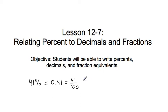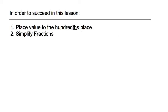You can already see that percent, decimals, and fractions are all related because there's a 41 in each one. To succeed, you'll have to be able to recognize the place value of the hundredths place, and also be able to simplify fractions by finding the greatest common factor and reducing them.